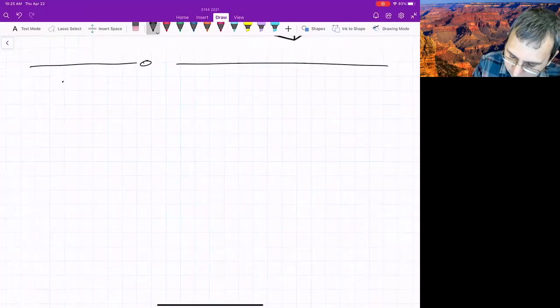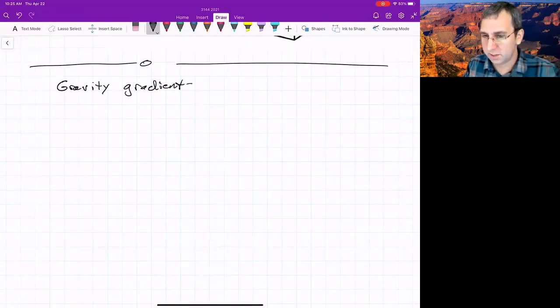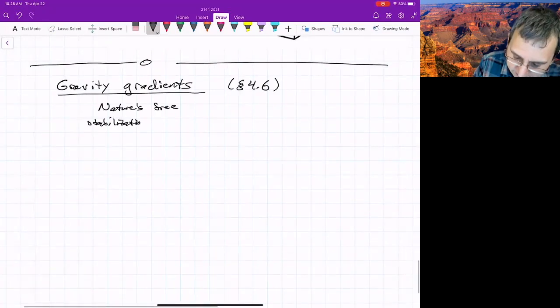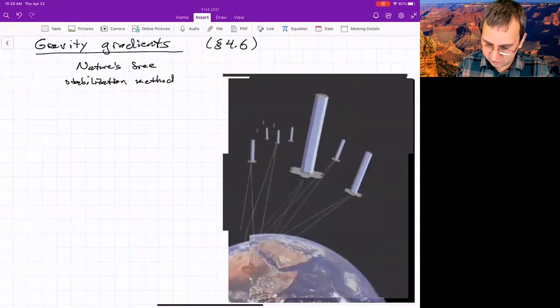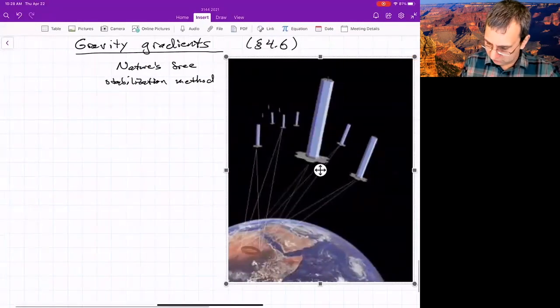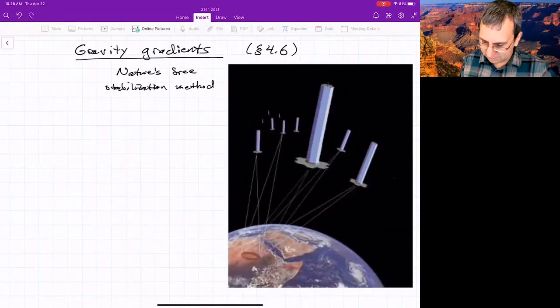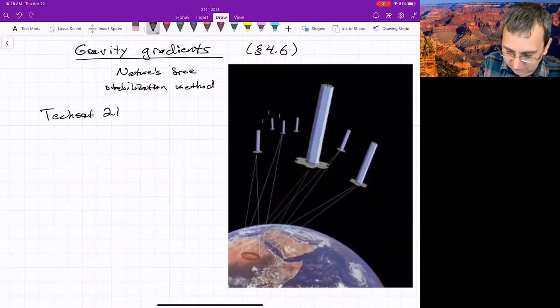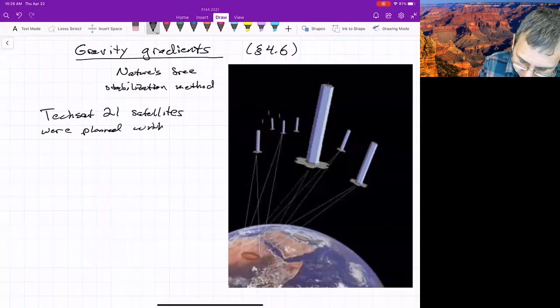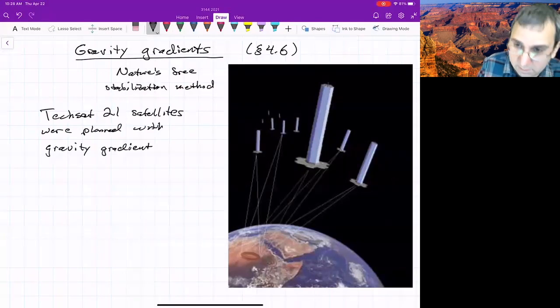That's sort of the general idea. So this is Section 4.6, Nature's Free Stabilization Method. And it's been used. TECH-SAT-21. They look like giant empty tubes just up in space. So this was used for the TECH-SAT-21 satellites. They were planned with the gravity gradient stabilization method in mind.